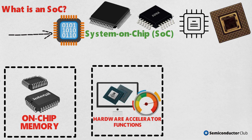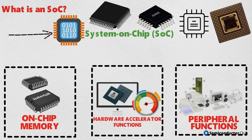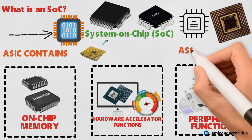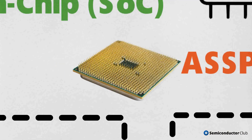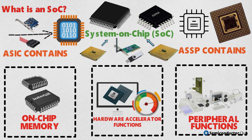One way to look at this is that if an ASIC contains one or more processor cores, then it's an SOC. Similarly, if an ASSP contains one or more processor cores, then it's an SOC. We can think of Ethernet controllers, PCIe controllers, SATA, and USB when we hear the word SOC.